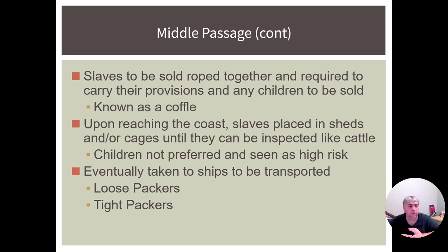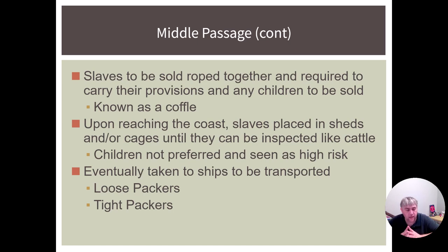Eventually they were taken to ships to be transported, and there were two different types of ships: loose packing ships and tight packing ships. Loose packers were worried about quality — if they could get the majority of slaves to the New World alive, they thought they could make more money. Tight packers were worried about quantity — they wanted to get as many people to the New World as possible, and even if they lost some on the trip, those who remained alive would make up for the cost of those who died.